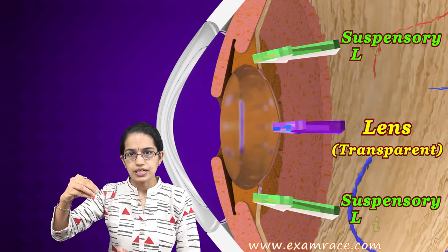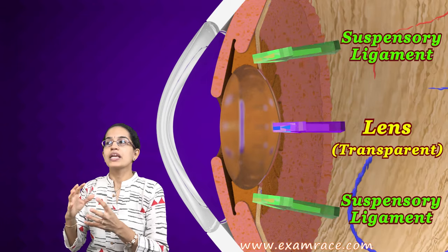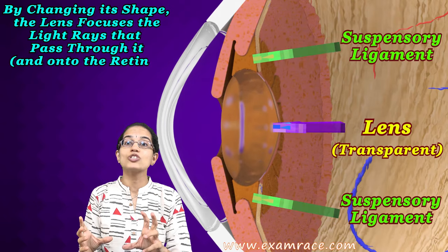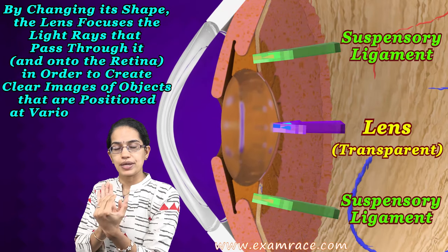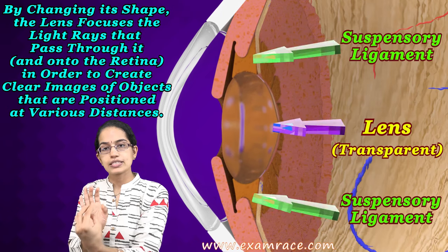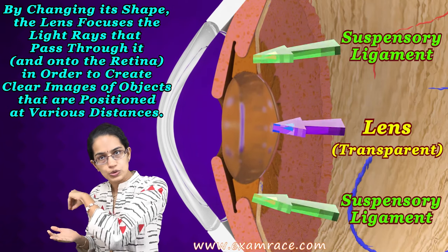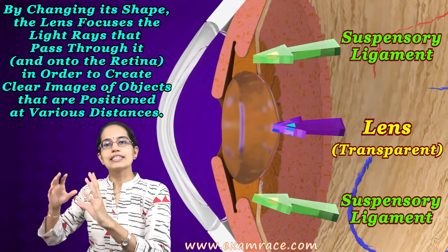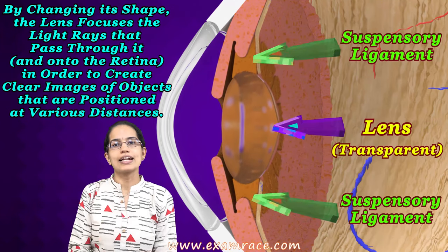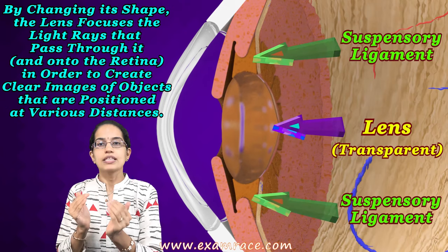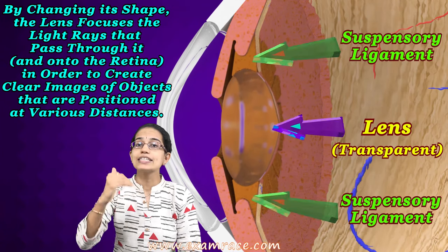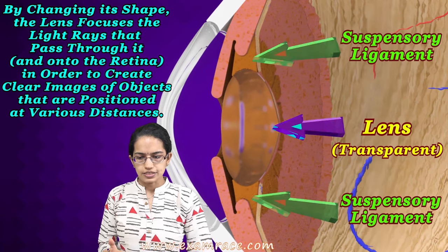The lens is transparent and is held by the suspensory ligaments. It is flexible and can change its shape based on the light coming in, trying to create a focus onto the retina behind. This capability to change shape is a higher-level concept related to the adjustment of the lens.